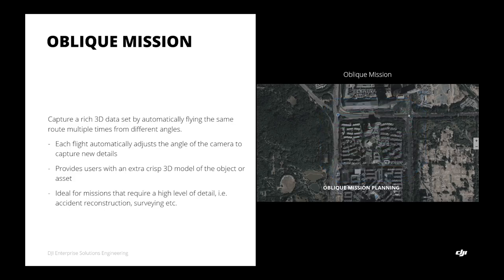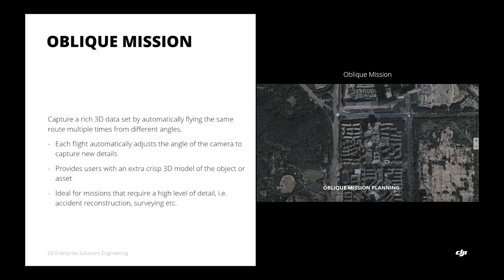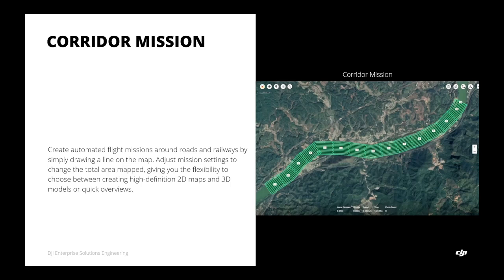In addition to mapping missions, DJI Terra also supports oblique missions, which create multiple flight routes with the gimbal tilted to capture scenes from different angles. This is helpful for collecting data needed to create a 3D model. The last basic flight mission type is corridor mission, which is very helpful for mapping roads, highways, or rivers. You can draw a line along the road and DJI Terra will create a mission based on the width you select, separating it into smaller portions based on aircraft flight time.